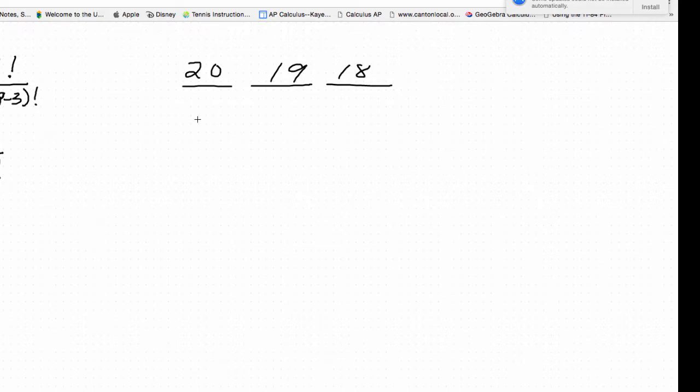And order matters there, and you were saying, okay, well, it's 20P and choose three. Okay, and we would do 20 factorial over 20 minus three, that quantity in factorial.